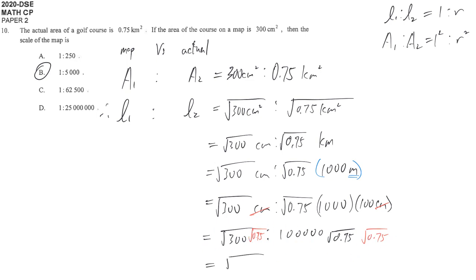And this gives you square root 225, which you can simplify, and then this will become 0.75. Therefore it becomes 15 to 7500. And then divide both sides by 15, we get 1 to 5000. Thank you.